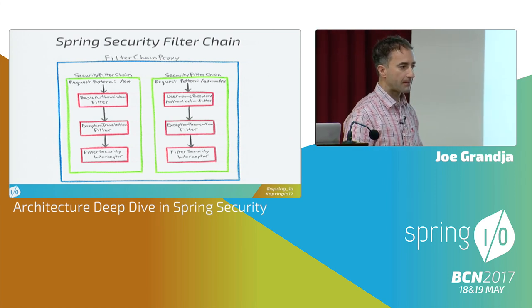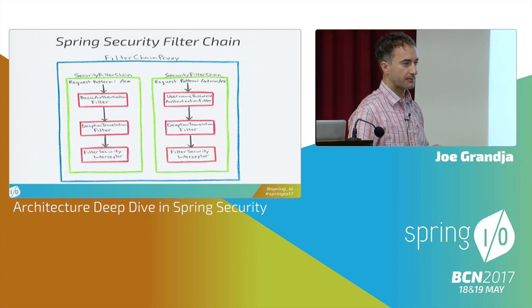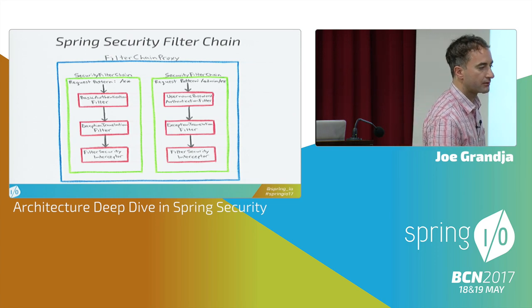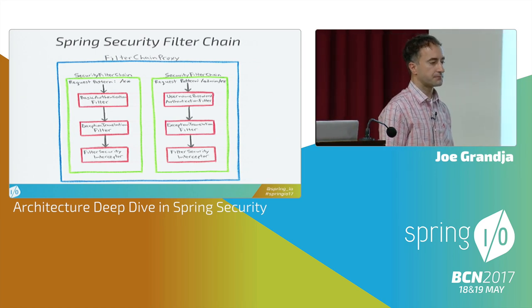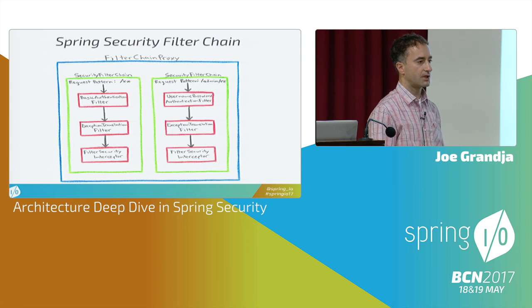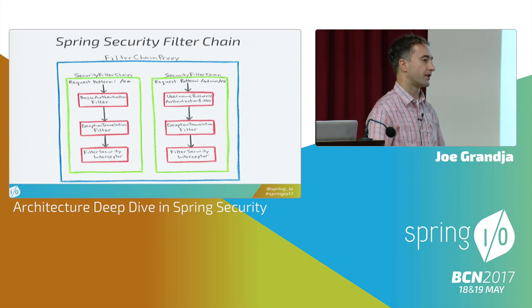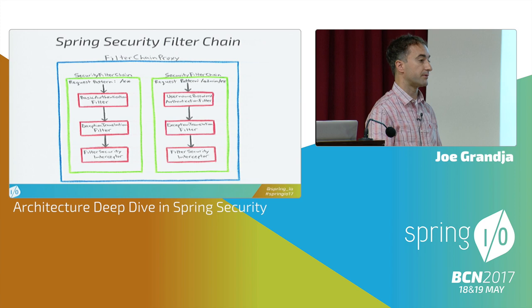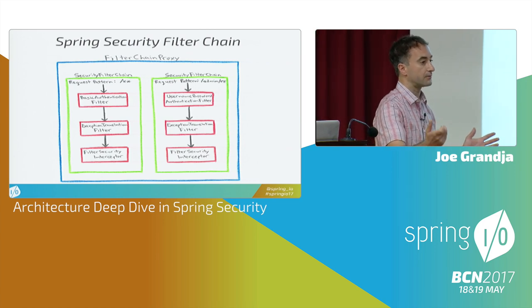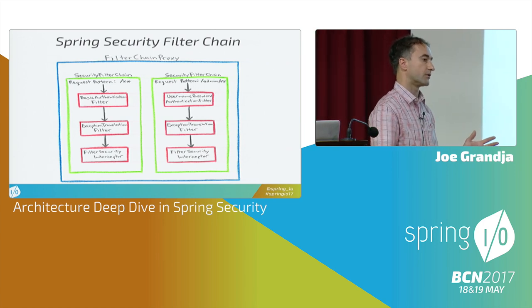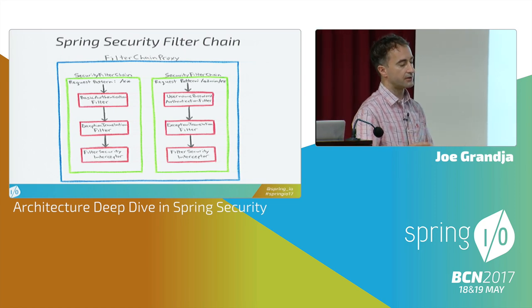Question about how Spring Security exceptions relate to Spring MVC controller advice: the controller advice is already past the filter security interceptor. It doesn't even get to the controllers — the exceptions are already caught within the Spring Security filter chain, which sits in front of the handler/controller. So the exceptions don't propagate to the controller layer.